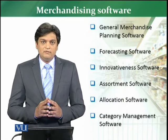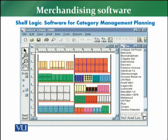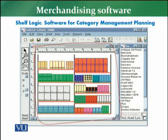Normally a store has a kind of shelf logic software for category management. As I explained, category management software helps in planning the whole merchandise. Considering the shelf in front of you, it is clearly identified where to place detergents, where to place toiletries, how many facings should be there, which size should be there, whether products go top to bottom or bottom to top, smaller to larger — whatever is decided is defined in the category management planning software.